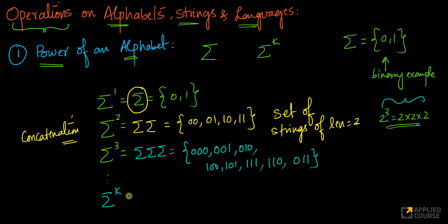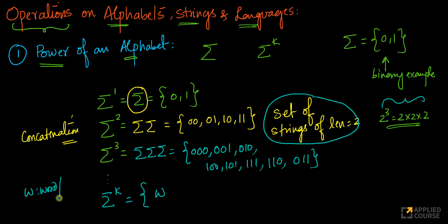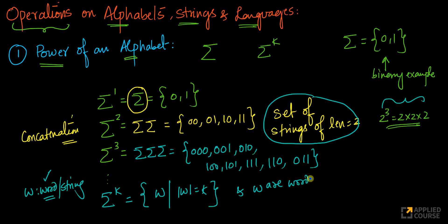So what does sigma power k now mean? Sigma square is a set of strings of length 2. Therefore sigma power k is defined as the set of all words w such that the length of w equals k, where w are words formed using sigma. That's the simple concept of what a power of an alphabet means.